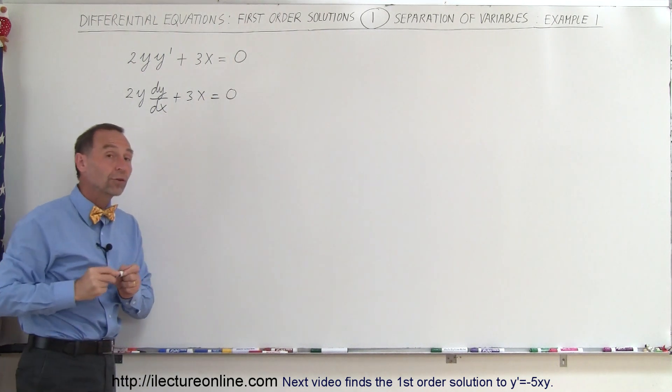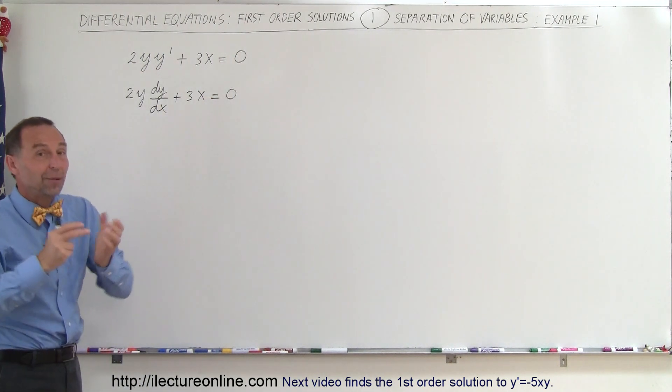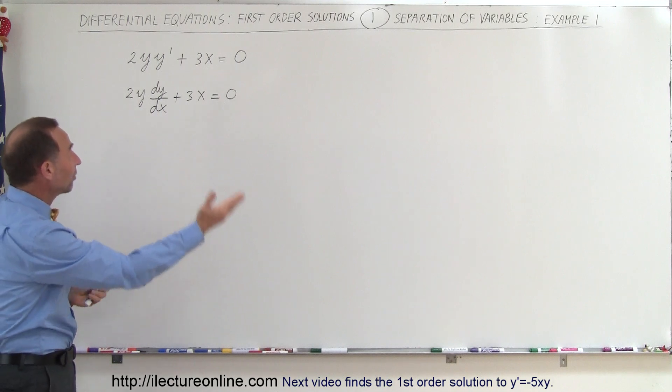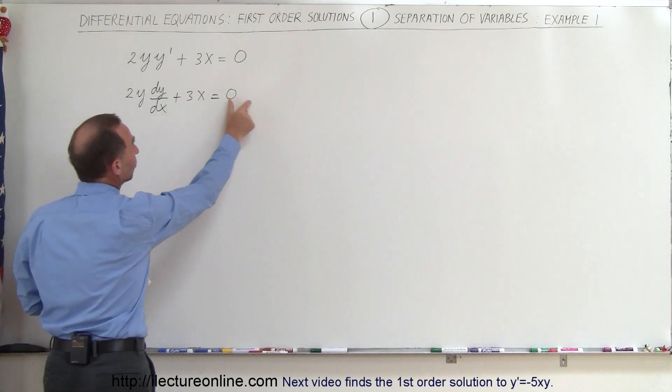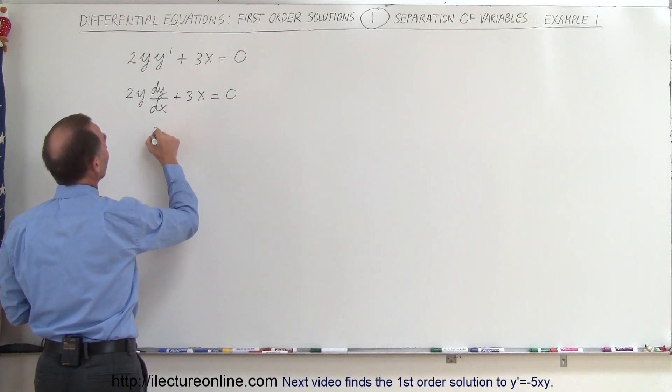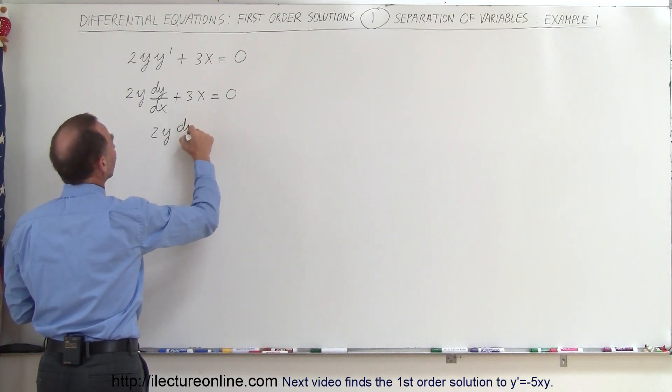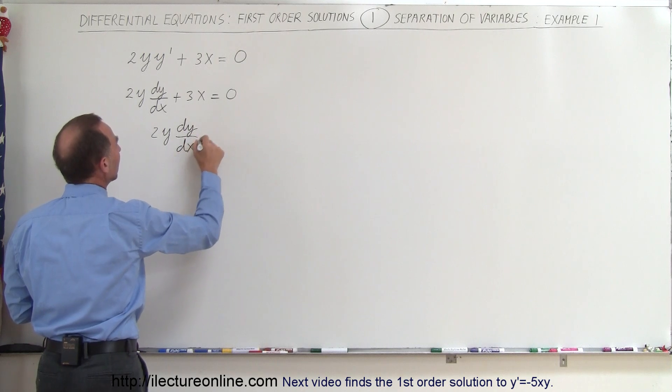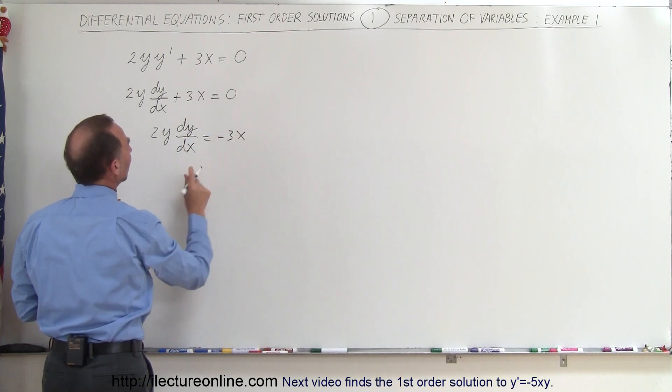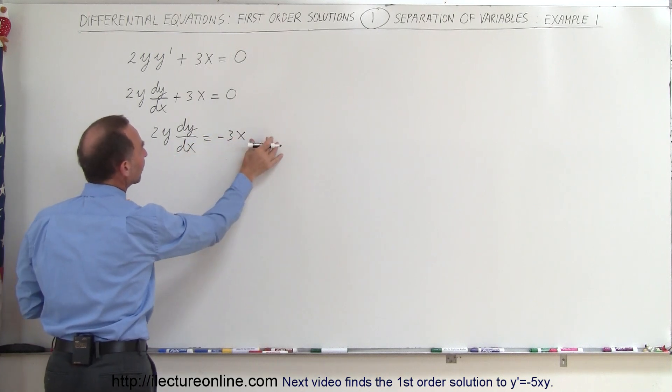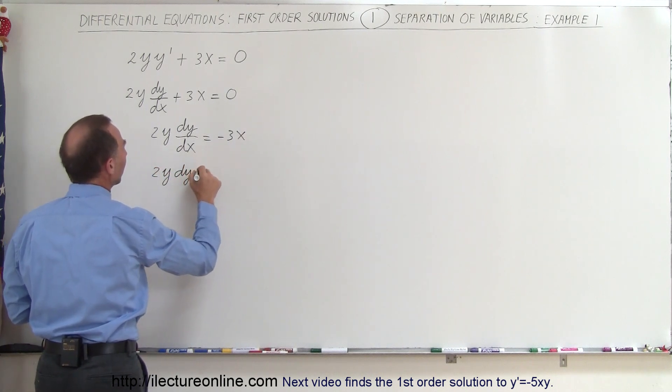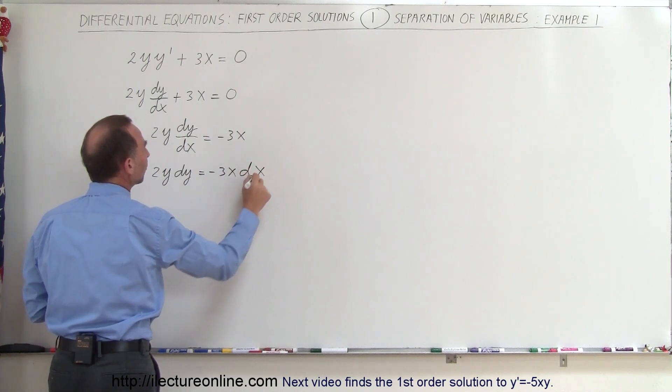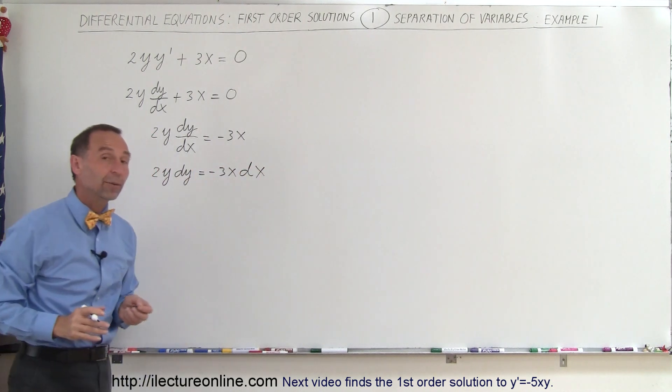So now the next thing we want to do here is what we call separate the variables. We put all the y's on one side and all the x's on the other side of the equation. So starting out, we'll put the 3x to the left, so this can be written as 2y dy/dx is equal to minus 3x. And now we move the dx to the right side of the equation, so this is 2y dy equals minus 3x dx.